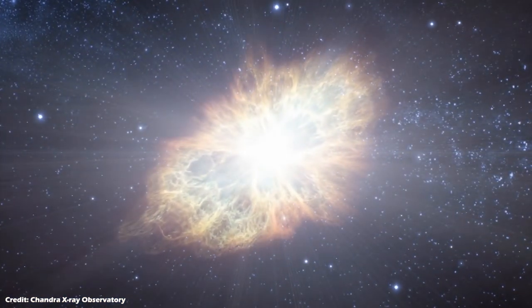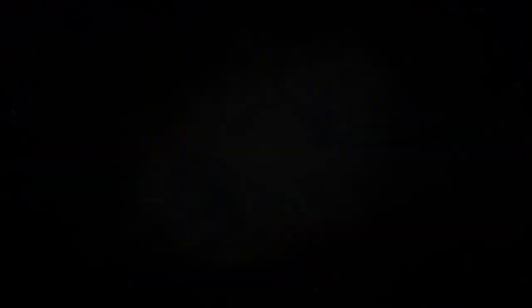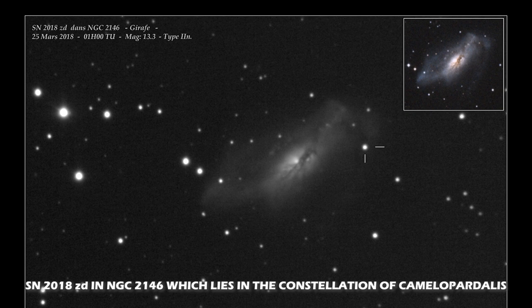Until recently, Type 3 supernova were never really observed. However, that changed in March 2018 when a supernova was spotted in the galaxy NGC 2146, which lies roughly 30 to 40 million light years away in the constellation of Camelopardalis.